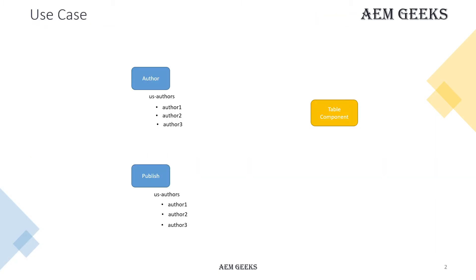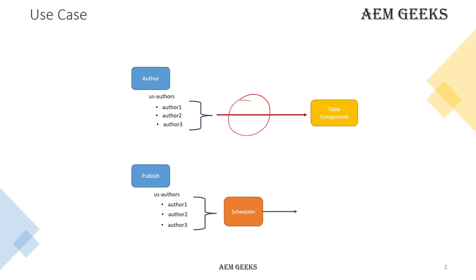At a high level, in our use case I will be having nodes which we need to display in a component. On author we can straight away display this information. We will be iterating nodes one by one. But on publish there will be performance issues — if you have 100k nodes or more, iterating them causes problems. So we will use a scheduler to create a JSON, and use that JSON to display the information.